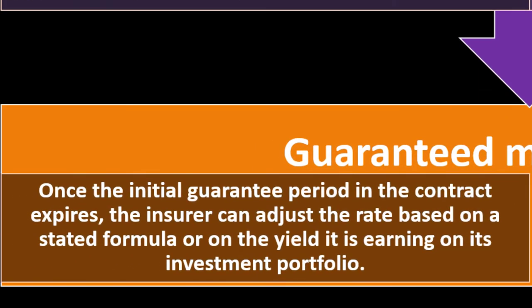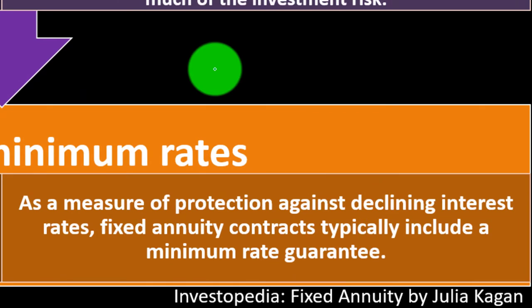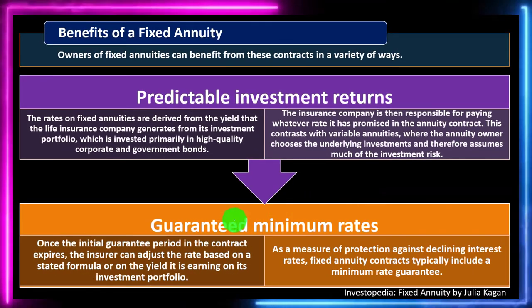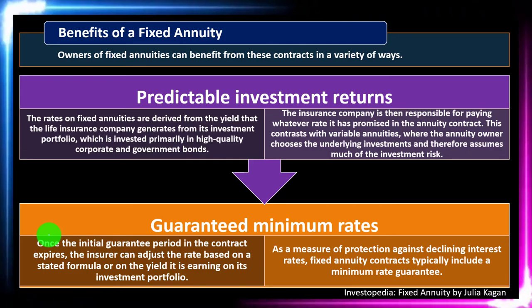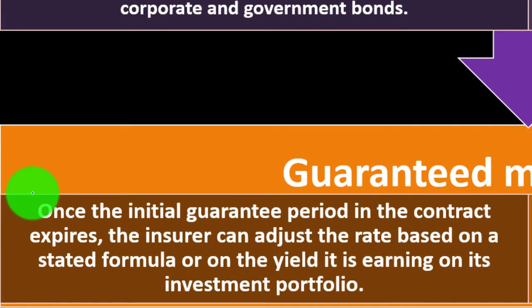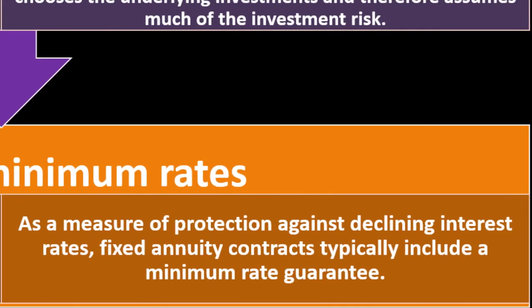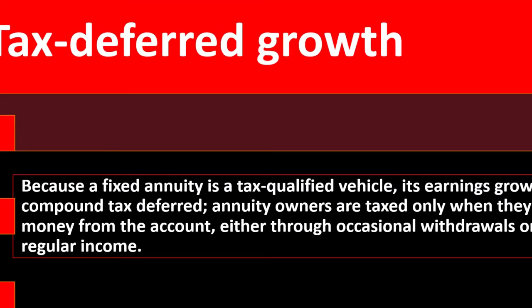Guaranteed minimum rates: once the initial guaranteed period in the contract expires, the insurer can adjust the rate based on a stated formula or on the yield it is earning on its investment portfolio. As a measure of protection against declining interest rates, fixed annuity contracts typically include a minimum rate guarantee, which gives more assurance during the guaranteed period.